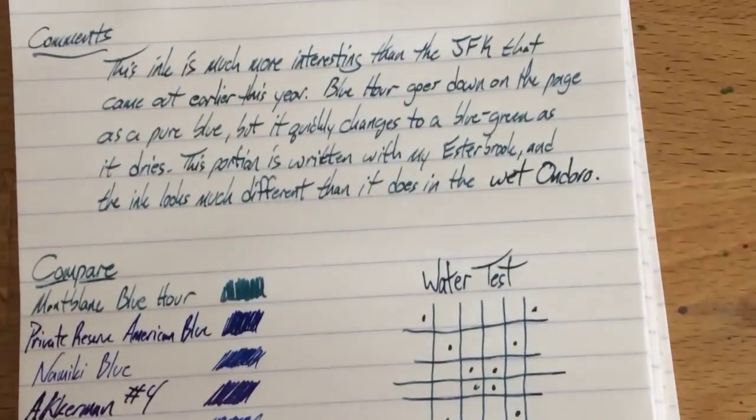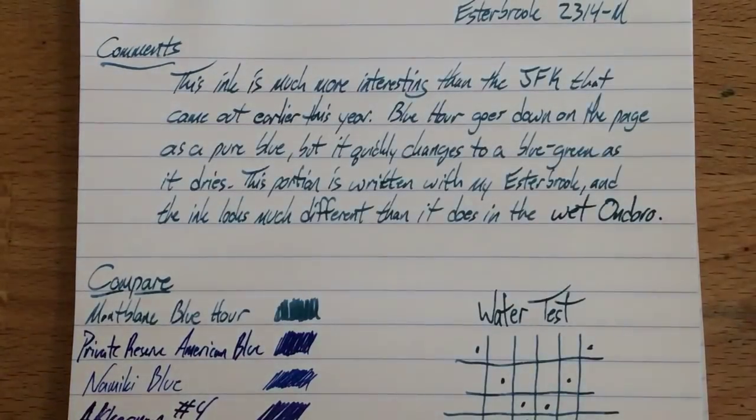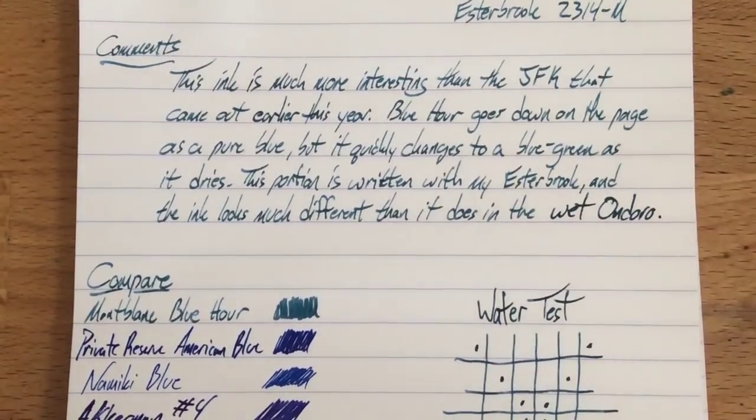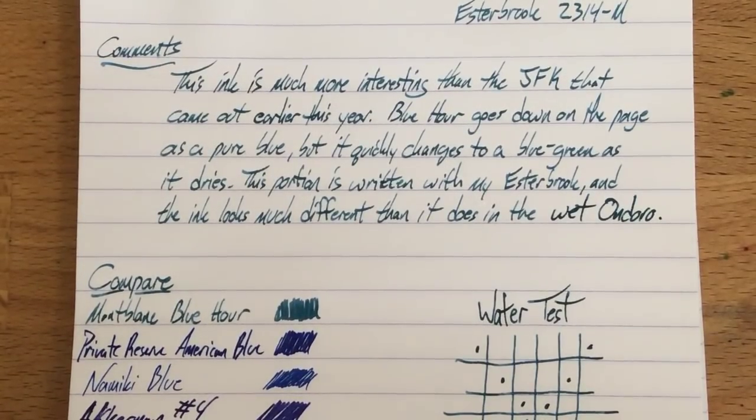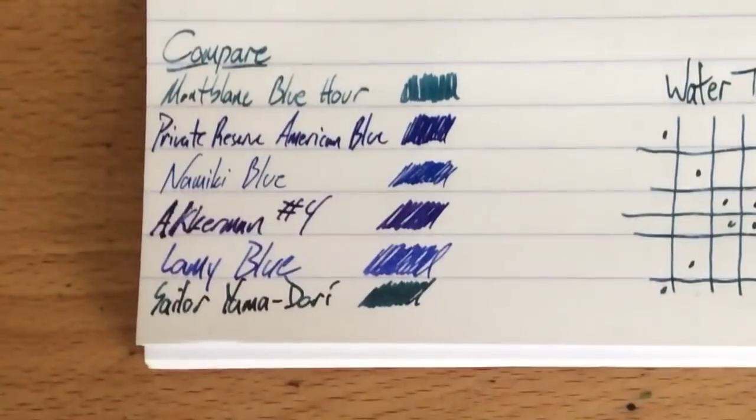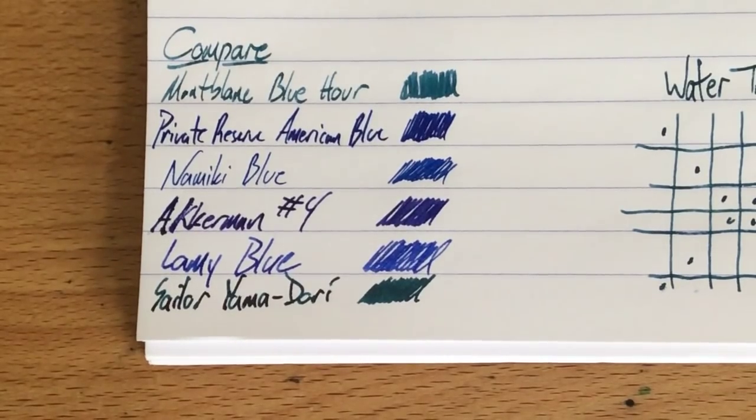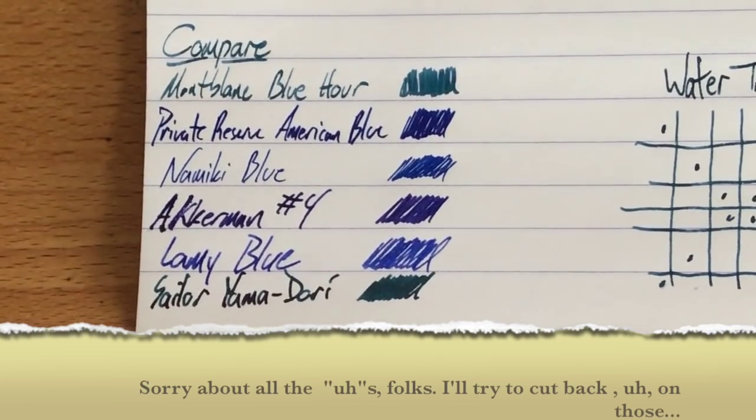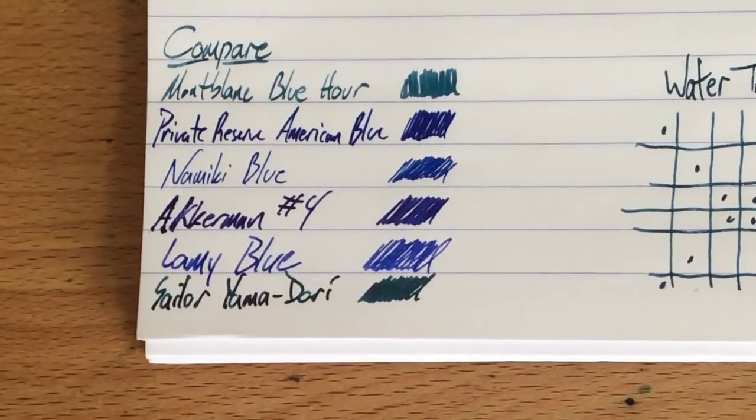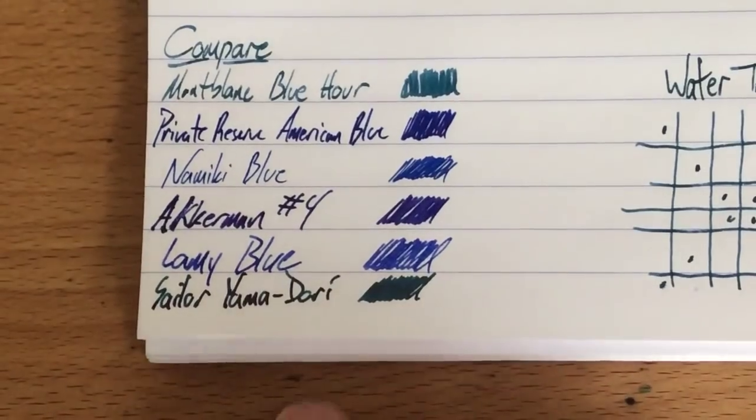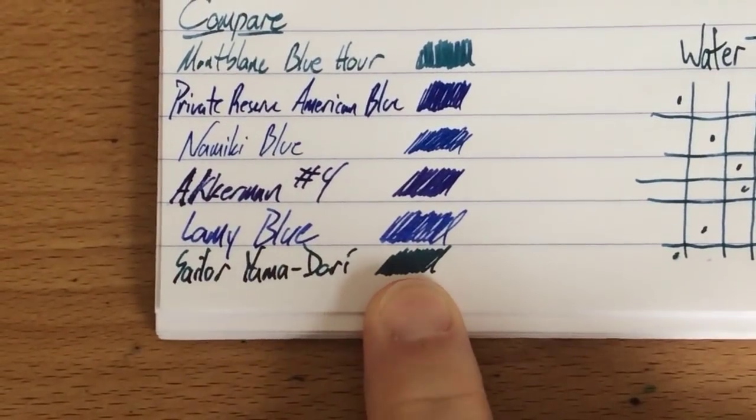Here we go, this is the commentary. You'll see better pictures of this on the blog. I think this one actually does change a bit. When you put it down on the page, it does start out blue and then kind of darken to a blue-green fairly quickly. This is kind of a bluish-greenish ink. I like it quite a bit. Here it is compared to a bunch of other blues. You can see the Mont Blanc Blue Hour there at the top, Private Reserve's American Blue which is one of my standbys, Namiki Blue which I like a lot, Ackerman's number four which is kind of purplish, Lamy Blue which is a straight-up blue blue, and then one that I thought was going to be closer, which is Yamadori, which is a lot darker than Blue Hour.